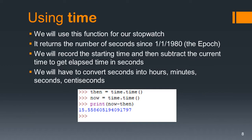This is going to be the heart of our stopwatch — it returns the number of seconds since the epoch. We're going to record the starting time, and then subtract the current time to get the elapsed time in seconds. We'll then convert the seconds into hours, minutes, seconds, and hundredths of a second, which will be centiseconds. In this example, we set then equal to the time, now equal to a new time, and print the difference — you can see it took 15 seconds. Your time will be different, of course, depending on how fast you type.